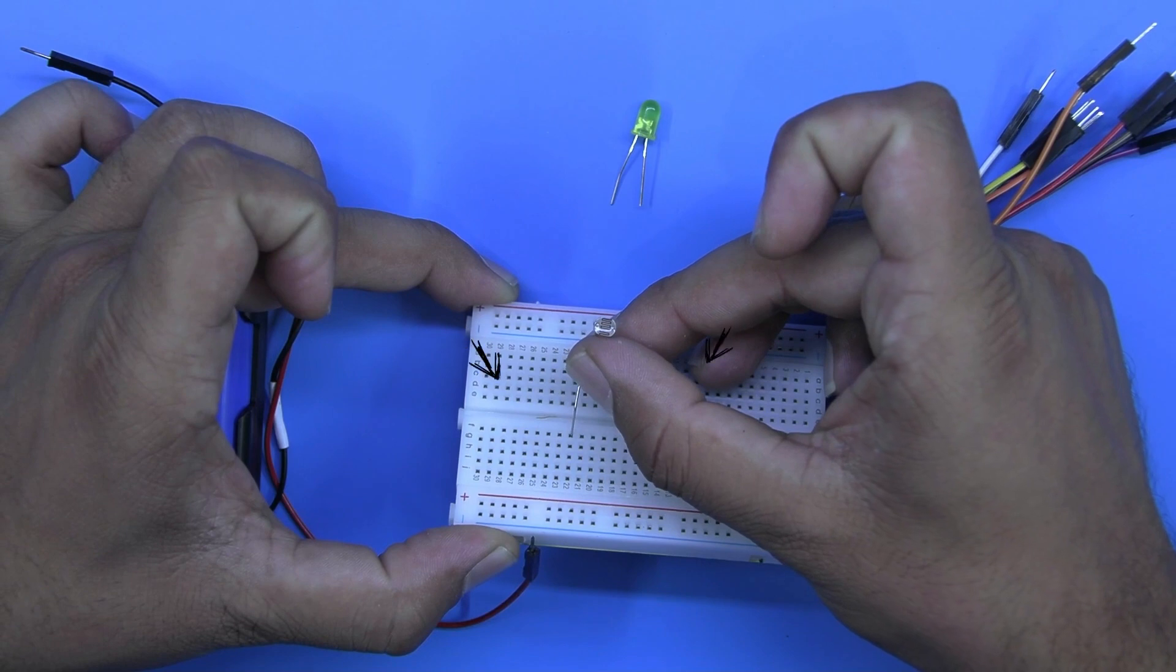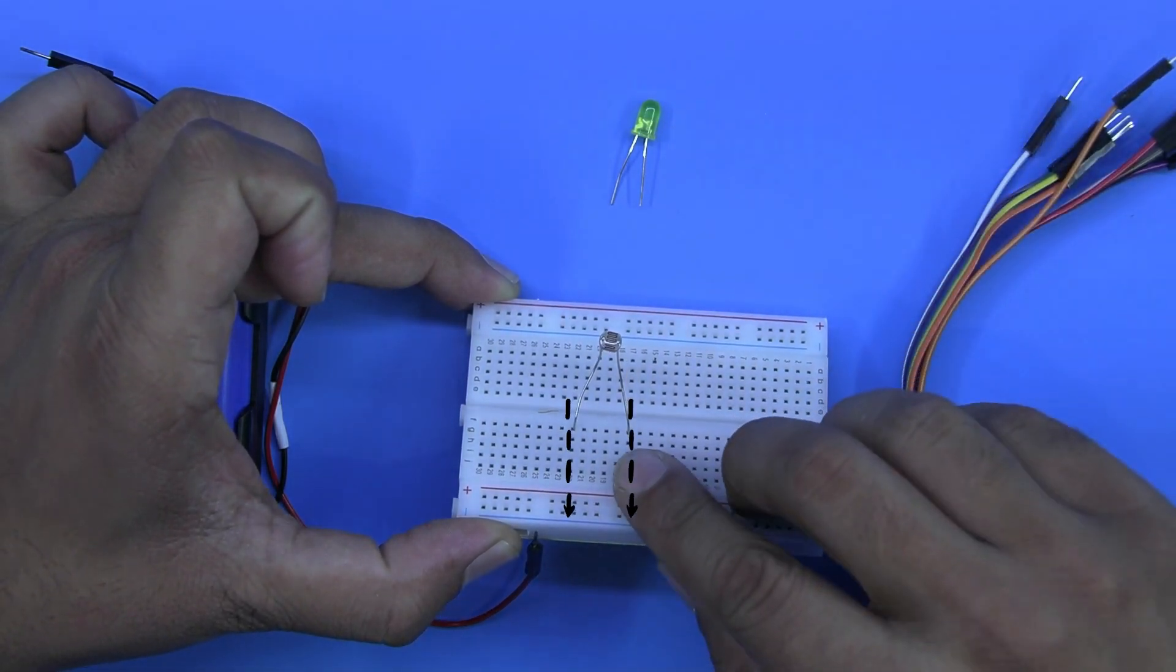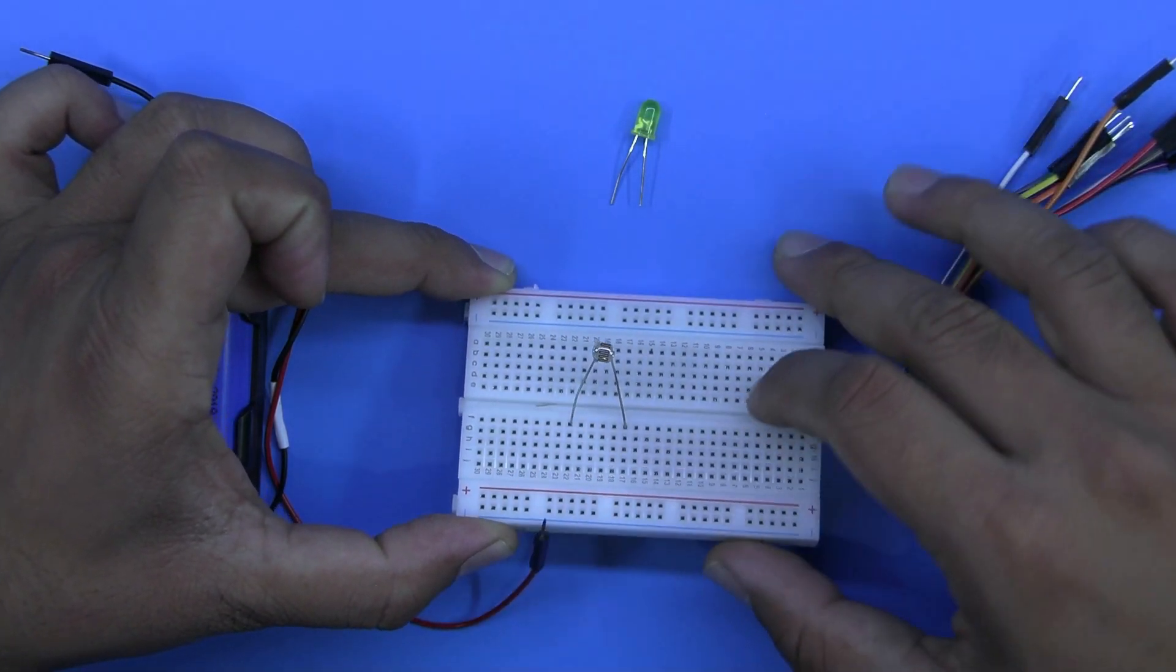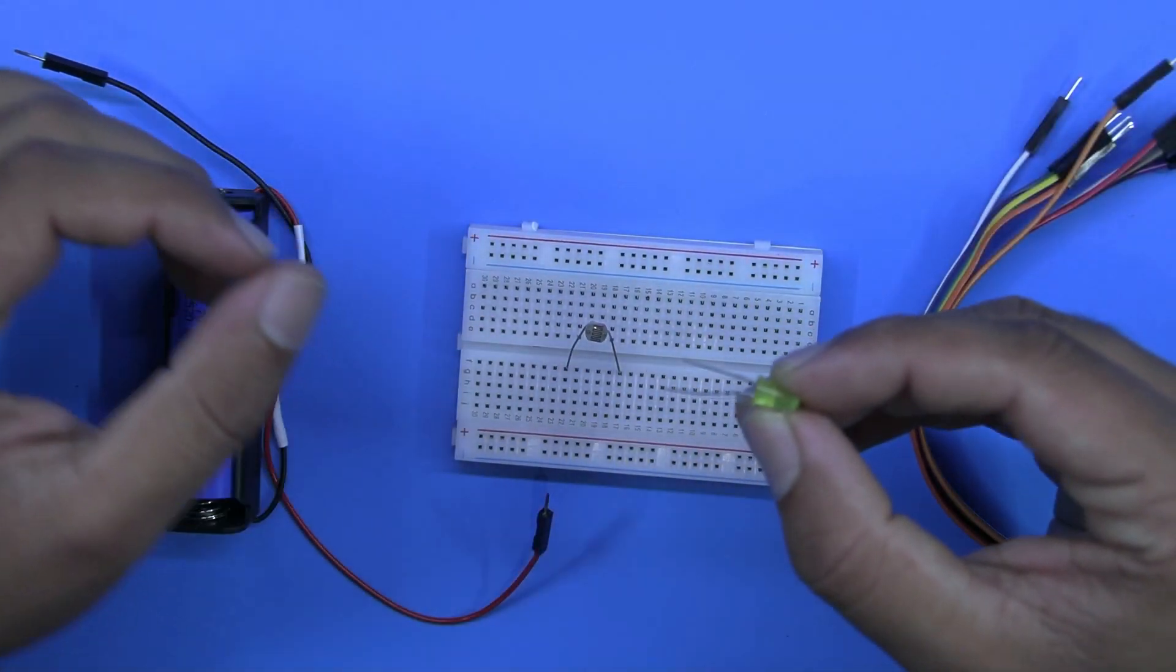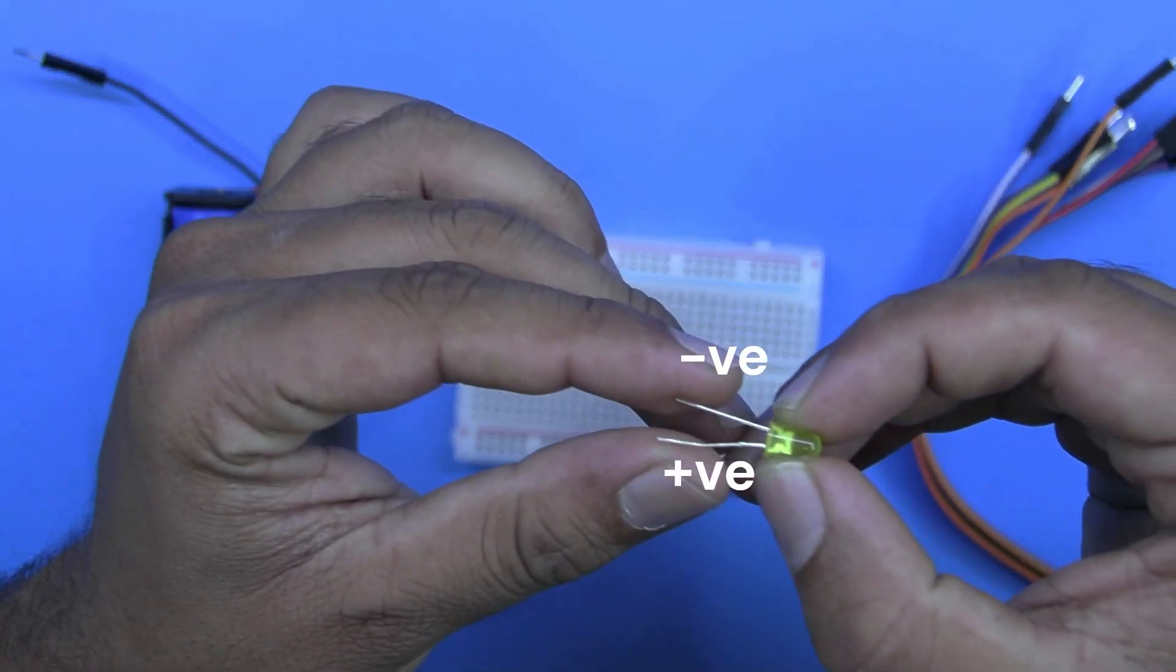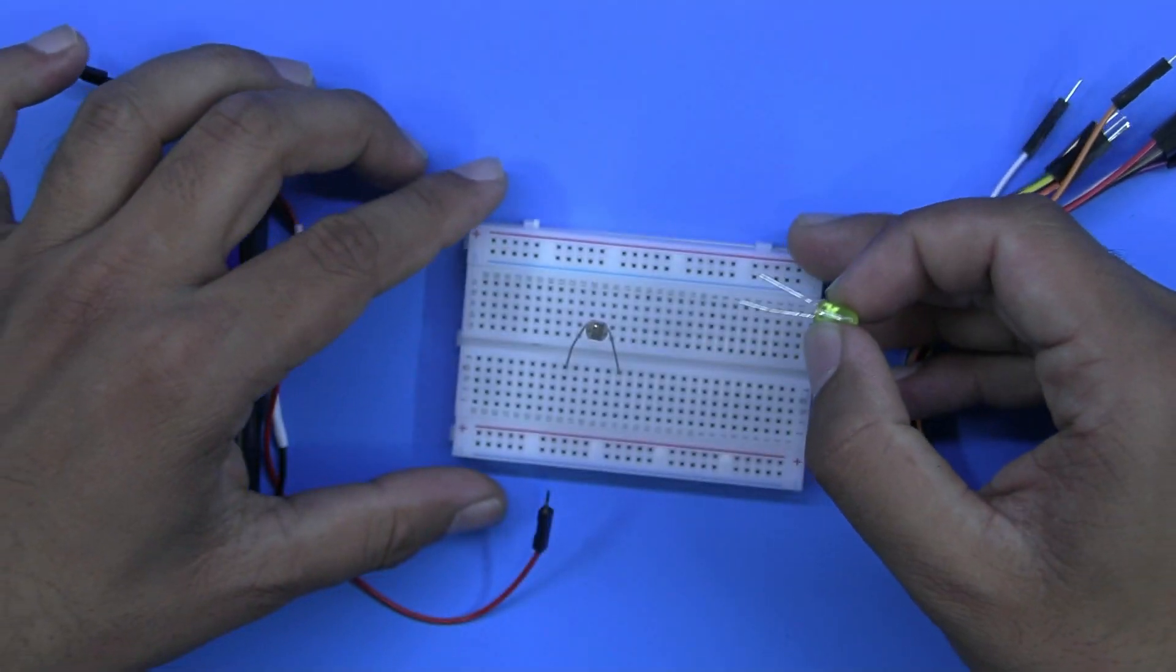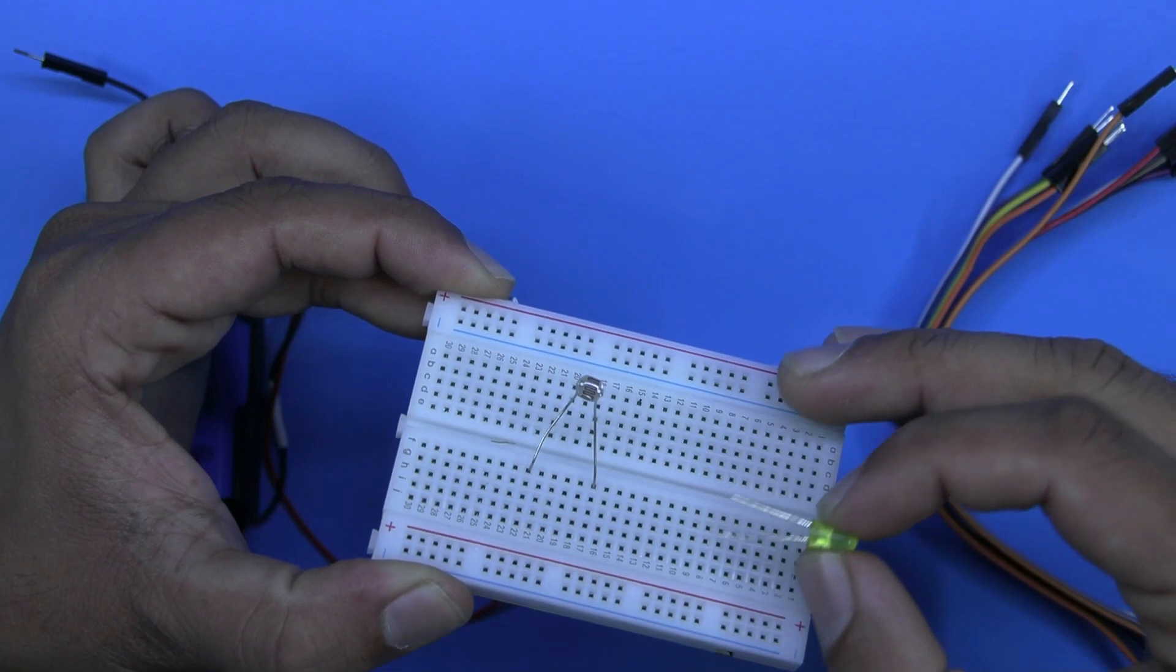Insert the sensor pins into the breadboard in a parallel way and connect the LED to it. Keep in mind the positive and negative terminals of the LED.